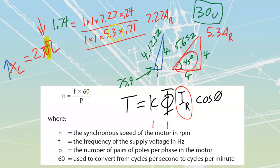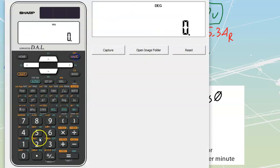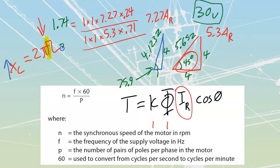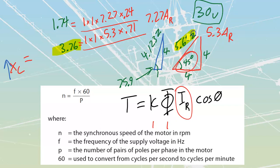Holy crap - we have a complete winner in the torque battle! Even though they have relatively similar values of impedance, it is the fact that the 45° triangle gives a really good angle compared to the poor 75.9° angle, allowing us to develop almost double to nearly triple the torque. This really good triangle is defined anytime resistance R is approximately equal to reactance XL.